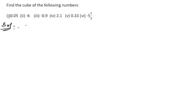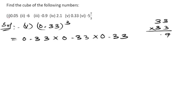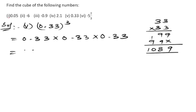Now the fifth problem: 0.33 whole cube. We write 0.33 into 0.33 into 0.33. First, multiply 33 by 33, ignoring decimals. Three threes are 9, three threes are 9, giving 99; then adding gives 1089. So 33 squared is 1089.